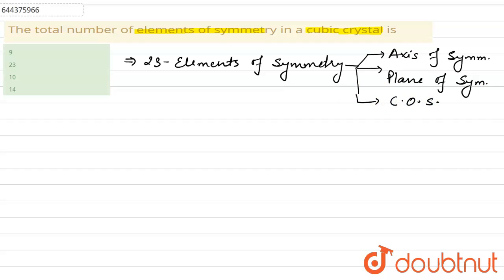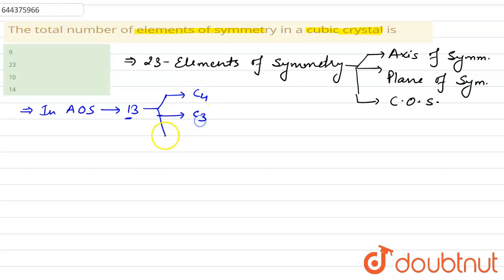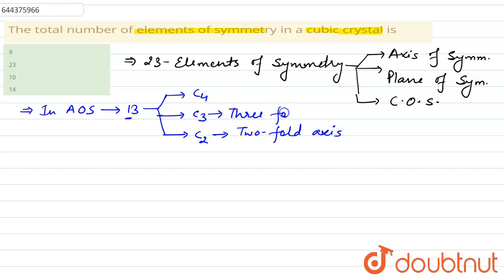Now we will explain them one by one. In axes of symmetry, there are 13 total axes. These are C4, C3, and C2. C2 are two-fold axes, C3 are three-fold axes, and C4 are four-fold axes.